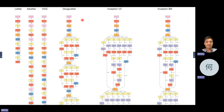People found that 100 layers is too many. Somebody tried to push to 1,000, but there was no significant improvement. So today it's around 20 to 50 layers.